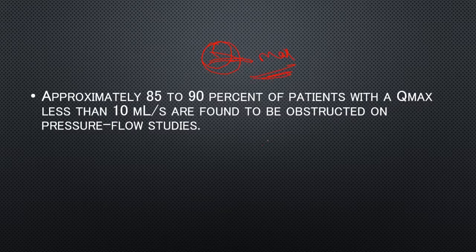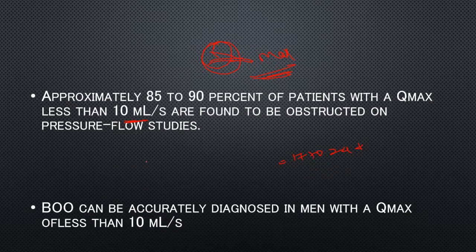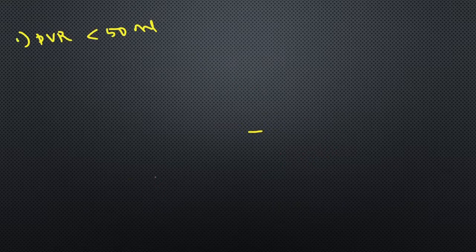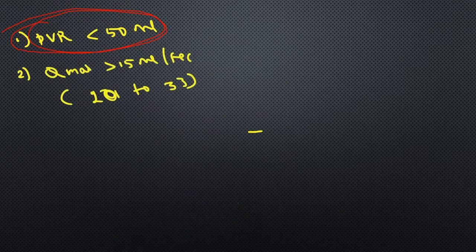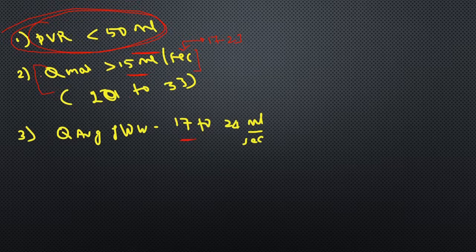The normal Q-max is age-dependent and ranges from 17 to 24, depending on male or female. But for a gross point of view, if Q-max is less than 10 that indicates abnormality. Q-max less than 10 is the threshold for abnormality. More than 15 ml per second is considered normal; less than 10 is abnormal. The normal range is approximately 17 to 23 as per age. Average flow is also in a similar range — this is a minor detail about normal average flow.